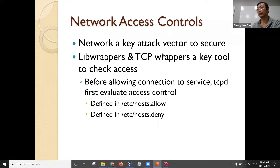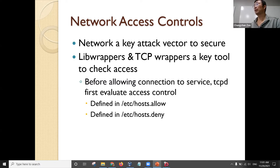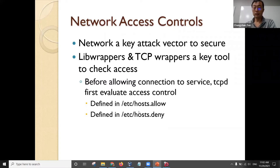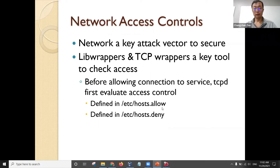Network access control — basically controls what internet users can access on your computer. Whenever you open a port, it opens a potential attack avenue for all internet users. For example, you can use the hosts.allow configuration file to set a whitelist and blacklist for any remote computer that can connect to your system. If you only allow certain computers to connect, you can put them in the hosts.allow configuration file.